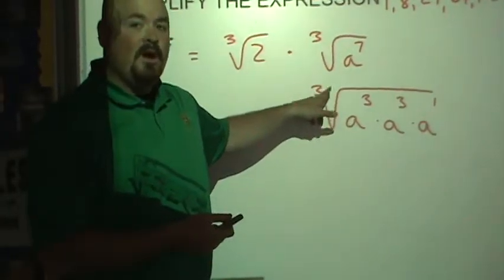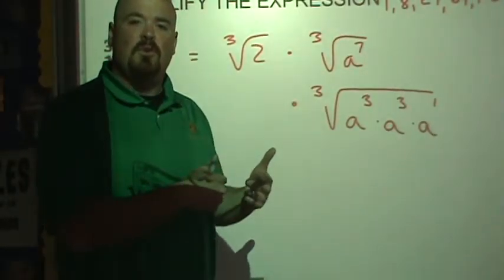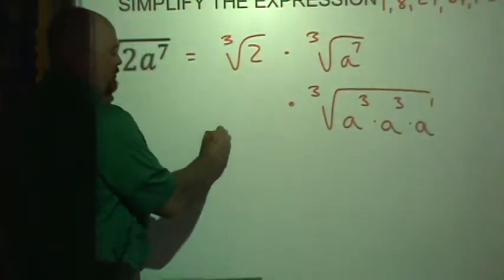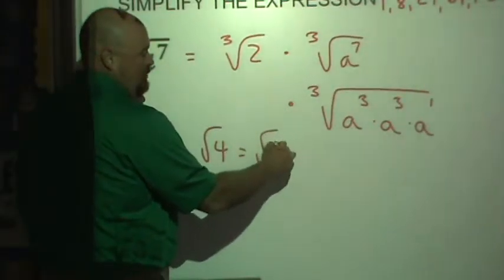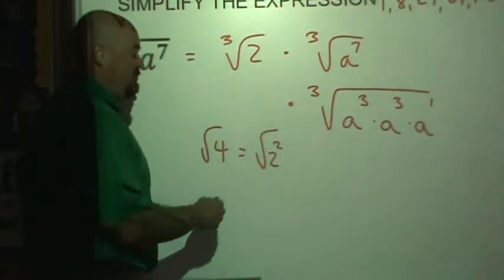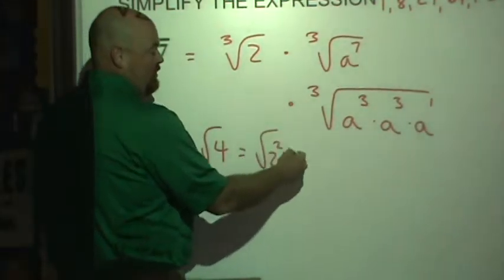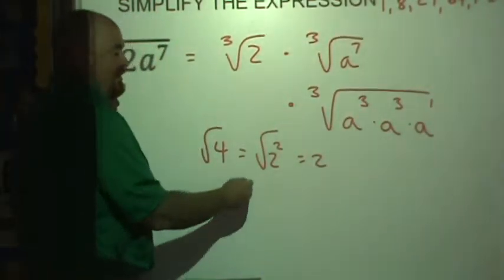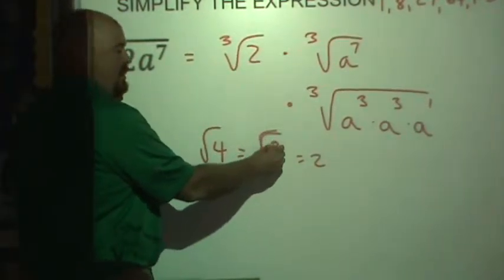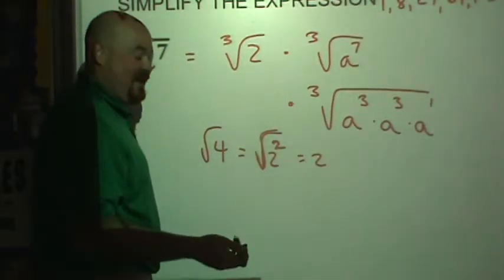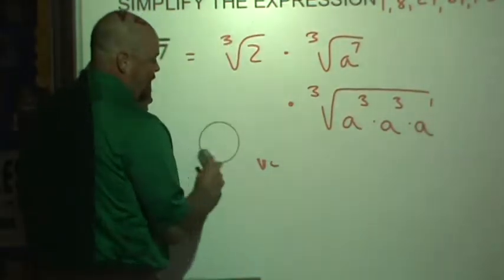Because the cubed root of something cubed, those are going to undo each other. Just like I've shown before, the square root of 4 is the square root of 2 squared, and the square root of 2 squared is 2. Any time we take the square root of something squared, we just get that base value as our answer.